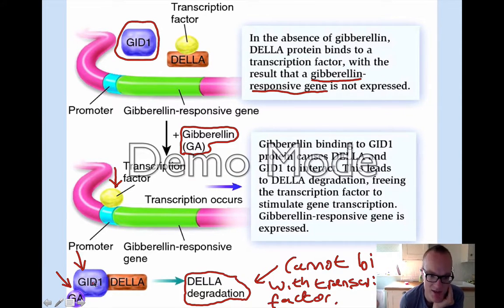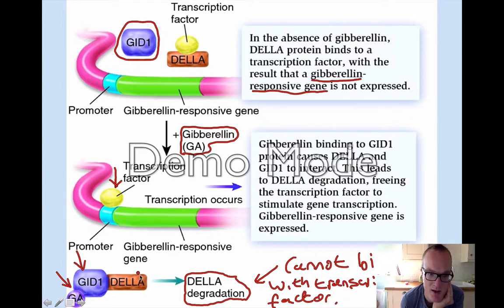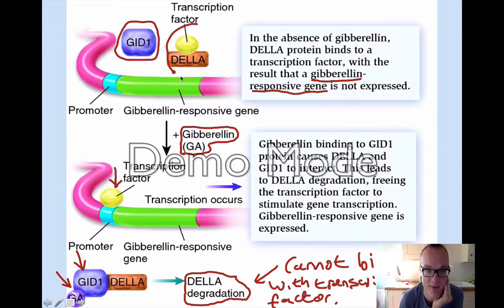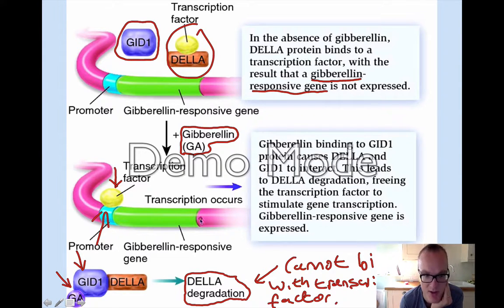So gibberellin binds to the GID1 receptor protein, which changes its shape slightly, allowing it to bind with DELLA. This complex is much more easily recognised by the cellular machinery — a proteasome, a machine designed to break down proteins — which will degrade and destroy the DELLA protein. Therefore the transcription factor will be free to bind to the promoter region, initiating the transcription of the amylase gene. That's how this system works.